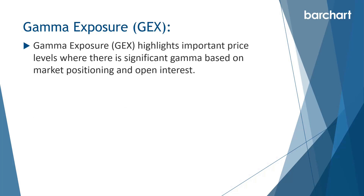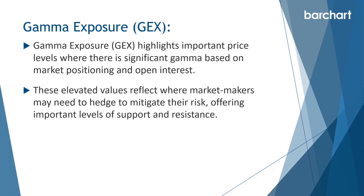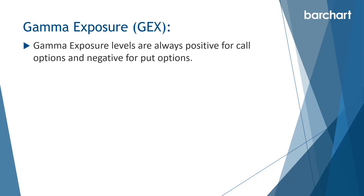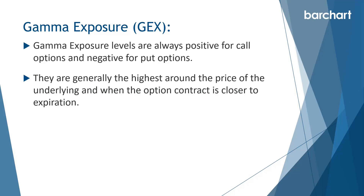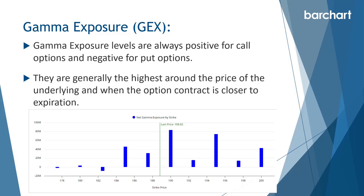Gamma exposure, or GEX, highlights important price levels where there is significant gamma based on market positioning and open interest. These elevated values reflect where market makers may need to hedge to mitigate their risk, offering important levels of support and resistance. Gamma exposure levels are always positive for call options and negative for put options, and are generally highest around the price of the underlying when the option contract is closer to expiration. You can see that here with Amazon, showing positive gamma at the 185, 190, and 195 strikes near the money on the main five-point strikes.